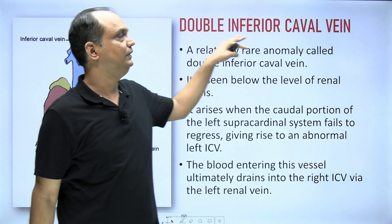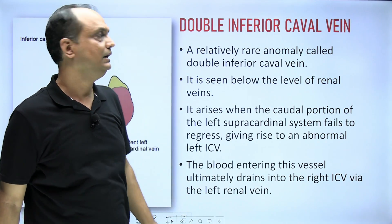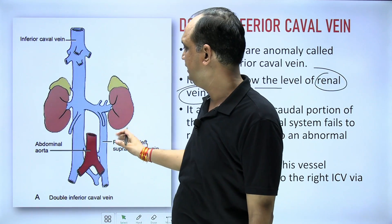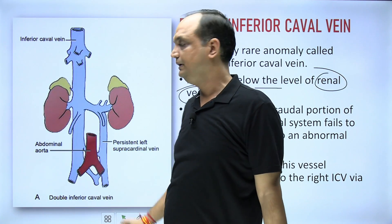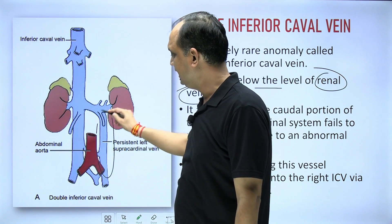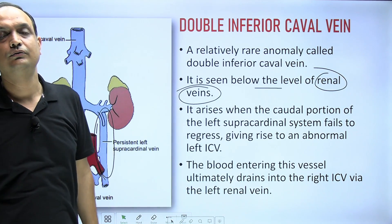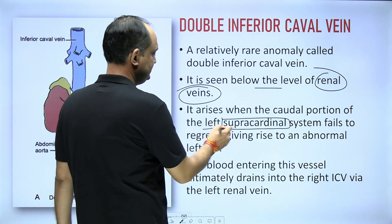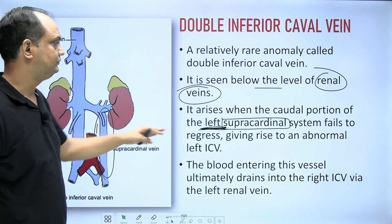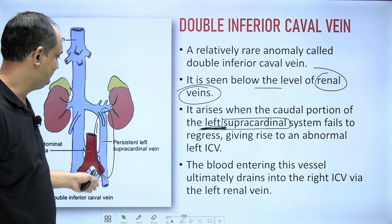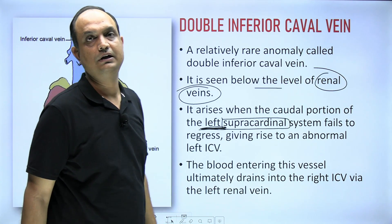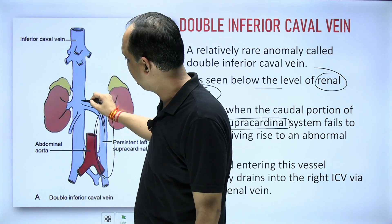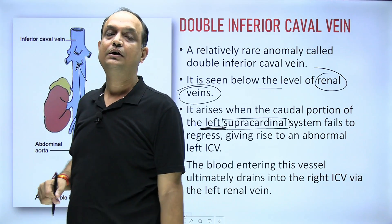The applied part is the double inferior vena cava, which generally forms below the level of the renal vein. This occurs due to persistence of the left side of the supra cardinal system. When the left supra cardinal system fails to regress, a double inferior vena cava forms. Blood from this part goes first into the left inferior renal vein, then through the left renal vein, and drains into the right atrium.